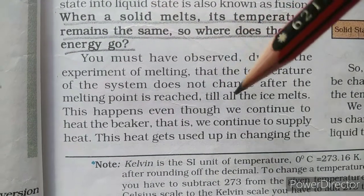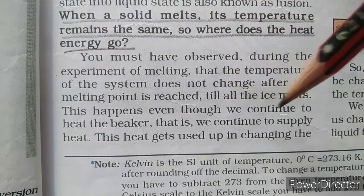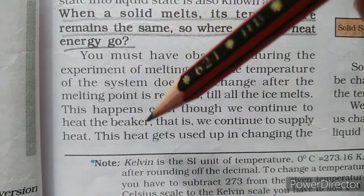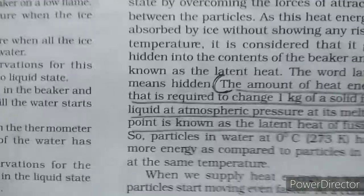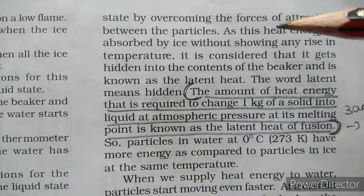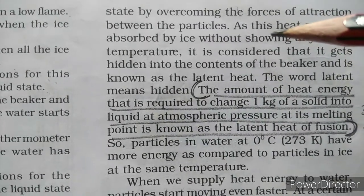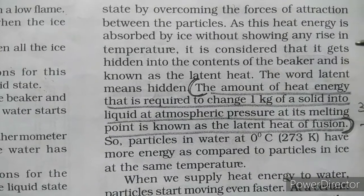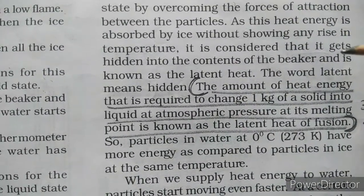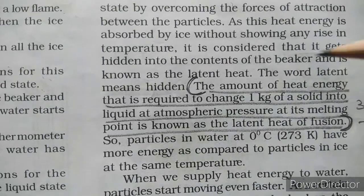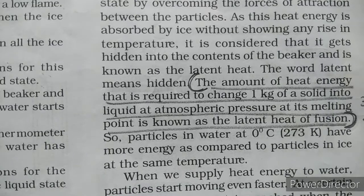This happens even though we continue to heat the beaker — that is, we continue to supply heat. This heat gets used up in changing the state by overcoming the forces of attraction between the particles. As this heat energy is absorbed by ice without showing any rise in temperature, it is considered to be hidden into the contents of the beaker and is known as latent heat. The word 'latent' means hidden.